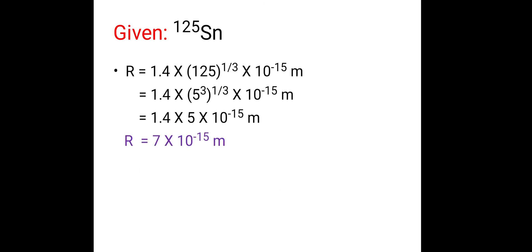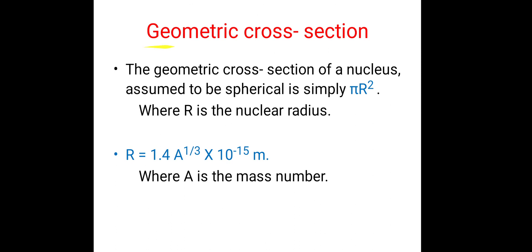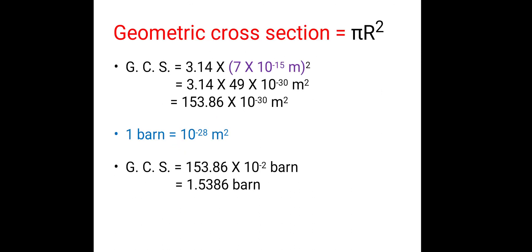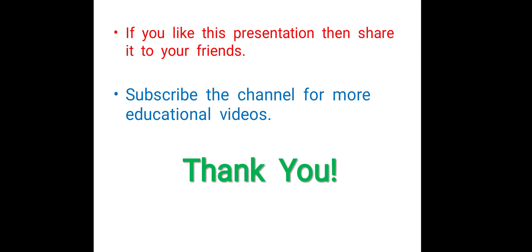This is our answer, and in our options there is option B which is 1.53. Therefore the geometric cross-section of Tin-125 is nearly 1.5386 barn. To solve this type of problem, we should know: what is meant by geometric cross-section, its formula π r², the value of r = 1.4 × A^(1/3) × 10⁻¹⁵ m, and that 1 barn = 10⁻²⁸ m². Thank you.